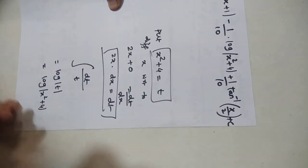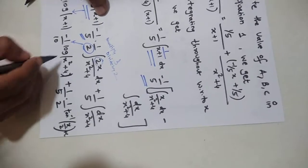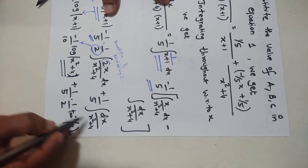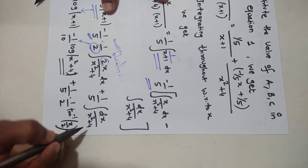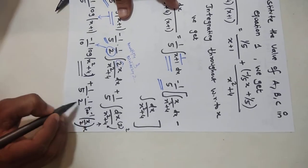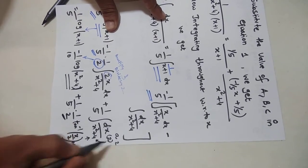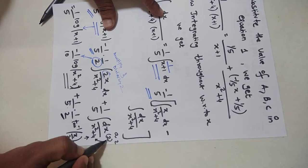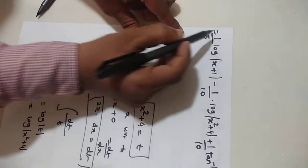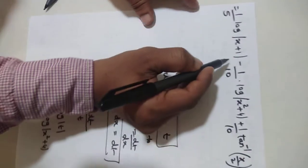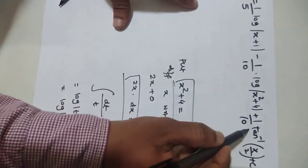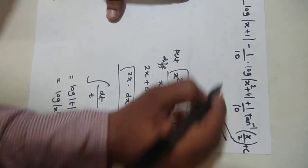Combining all terms, the remaining integral of 1/(x² + 4) uses the standard formula: 1/a · tan⁻¹(x/a), where a = 2. The final answer is: (1/5)·log|x + 1| − (1/10)·log(x² + 4) + (1/10)·tan⁻¹(x/2) + C.